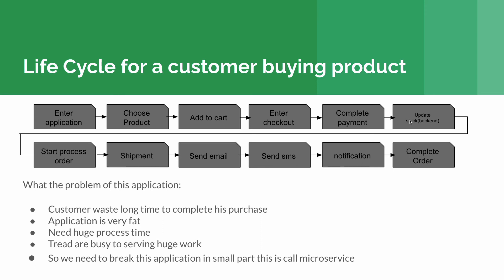After the payment is completed, various back-end processes are triggered. The stock is updated, the order moves to processing, another team gets information about what orders need to be processed, shipment information is triggered, and then an email, SMS, and notification are sent to the customer. After all this, the order is fully completed without any problem — but notice how many processes happen in the background.